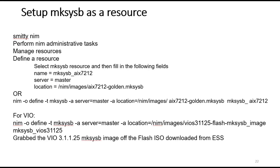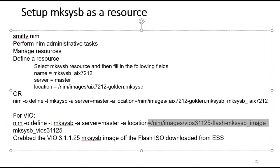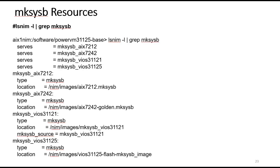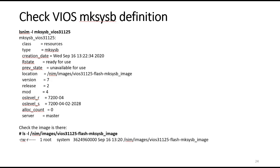To set up your makesysb as a resource, you can do it through SMIT or use 'nim -o define'. You have the choice of having it copy the makesysb image in, or using one you've already copied in — I tend to copy it in myself. For the VIO server it's basically the same command, copying a flash makesysb image and giving it a name. Looking at my makesysb resources, I have four of them. Using LSNIM -l against the makesysb will tell you when it was created and what the OS level is.